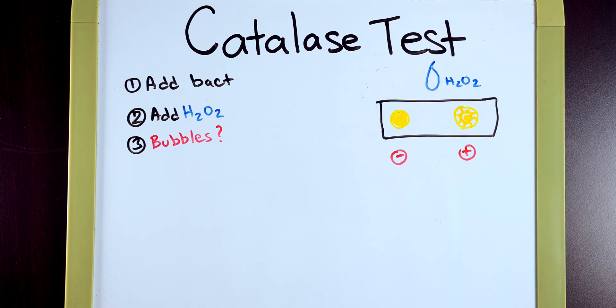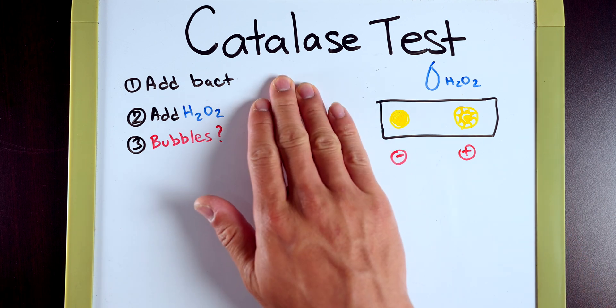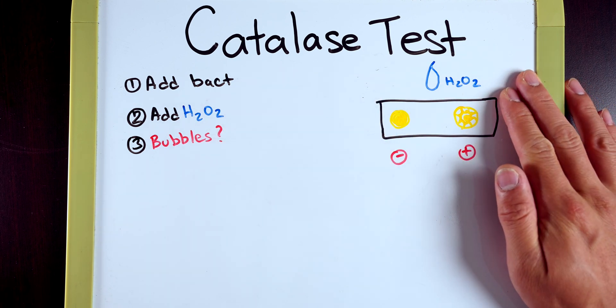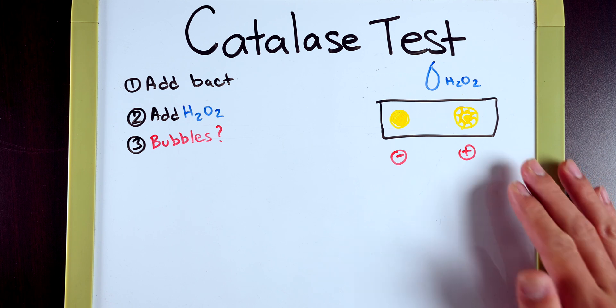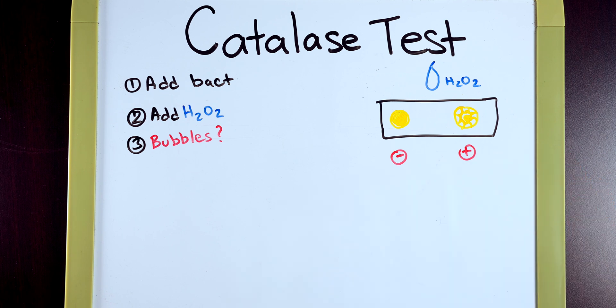The significance of this means that the enzyme catalase broke down hydrogen peroxide into water and oxygen molecules. But what does this mean in the bacteria's perspective?